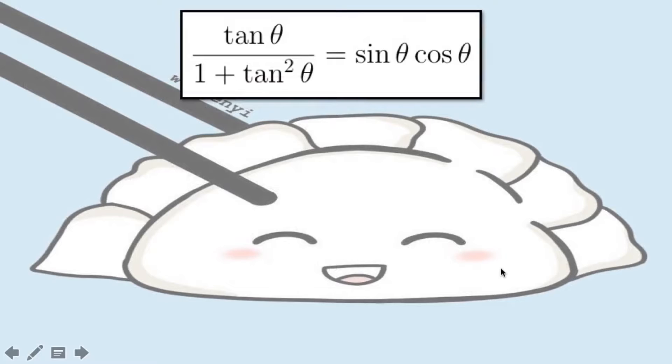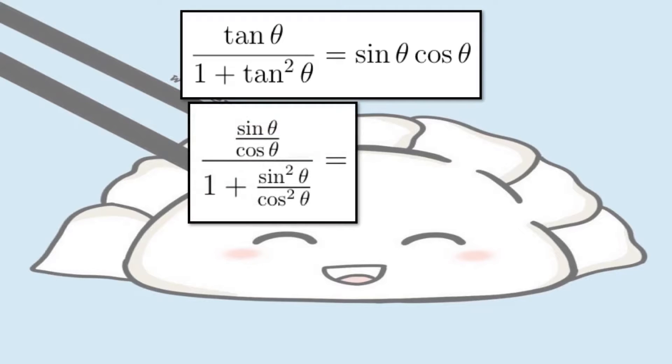For the first step, we want to change tangent theta in terms of sines and cosines. Since we know that tangent theta is sine theta over cosine theta, we simply substitute it as shown.